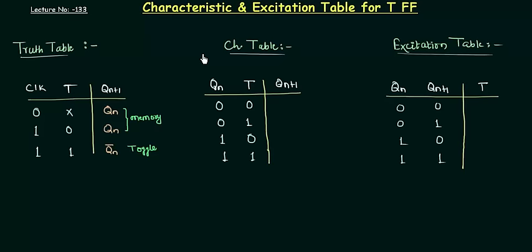Welcome to this presentation. In the last one we completed the introduction to the T flip-flop and also found out a truth table for it, in which T is the input and clock of course. When the clock is low, whatever be the value of T, we are going to have the memory state because the flip-flop is not operational.